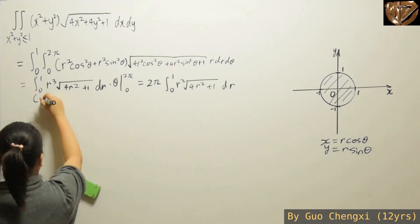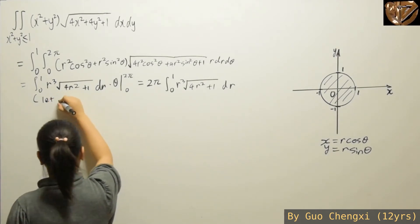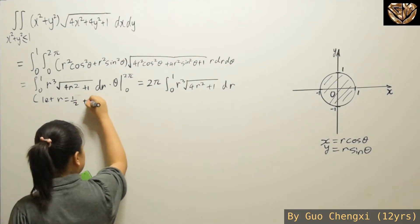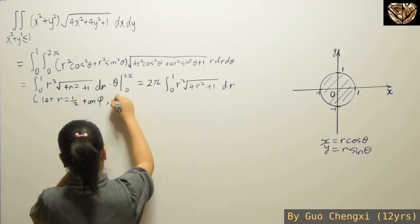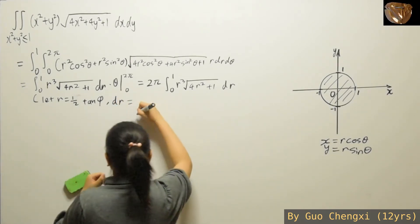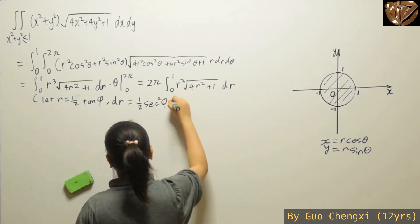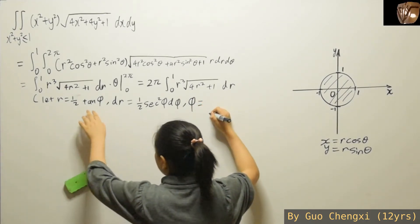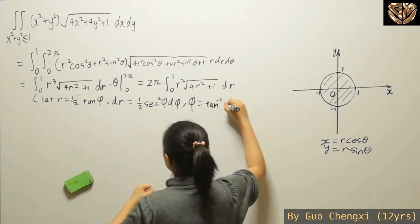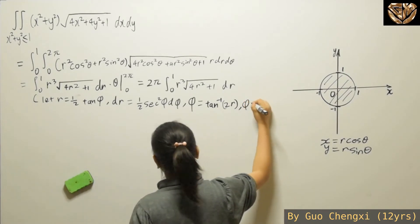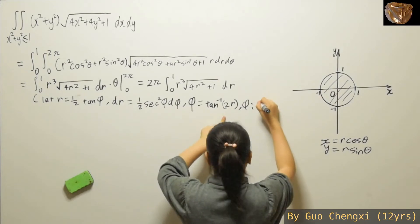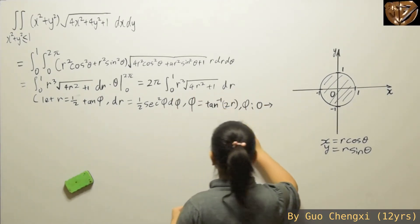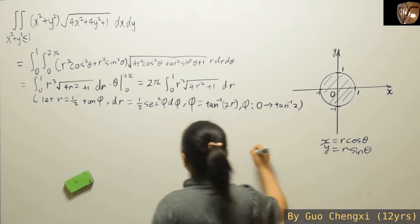Apparently you can solve it by using a trigonometric substitution. We let r = ½·tan(φ). Differentiating both sides to find dr, you get dr = ½·sec²(φ) dφ. To find the boundary for φ, rearrange to φ = arctan(2r). Substituting r = 0 gives φ = 0, and substituting r = 1 gives φ = arctan(2).